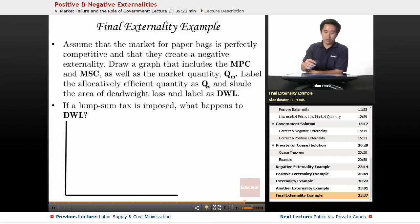Here's the final externality example. Let's assume that the market for paper bags is perfectly competitive and that they create a negative externality. Draw a graph that includes the MPC and MSC.